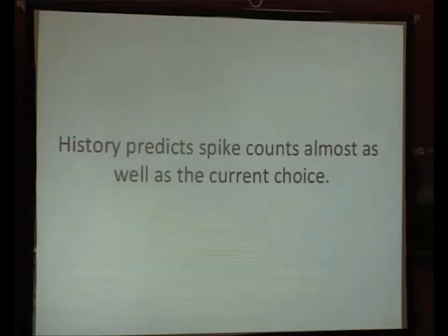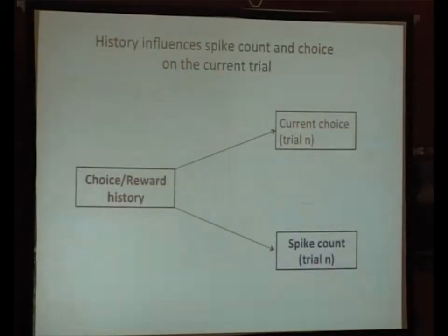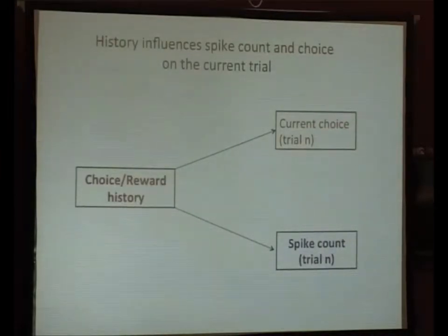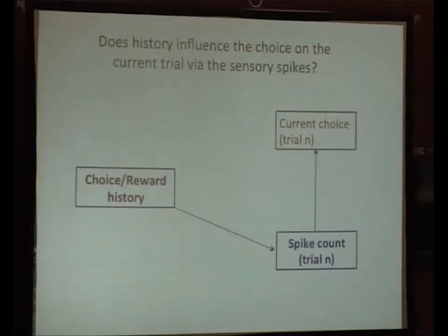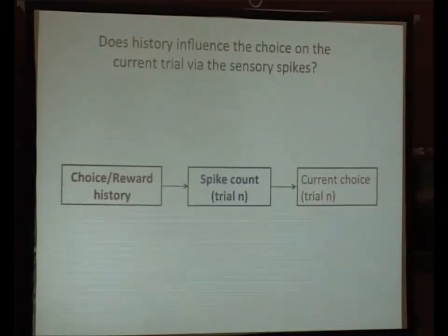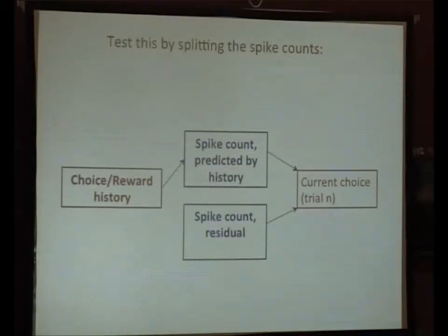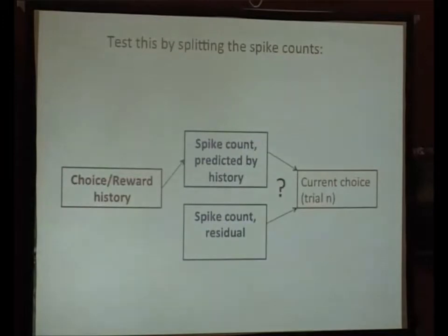What I've shown is that reward and choice history actually affects both the current choice and the spike count on the current trial. Now I can ask: does choice and reward history affect the current choice via the spike count? I'm going to test this by separating the spike count into two components — one predicted by choice and reward history, and then the residual — and then compute the choice probability for each of these two components.